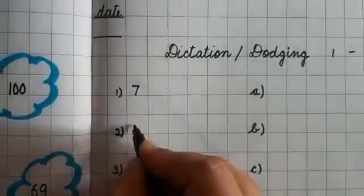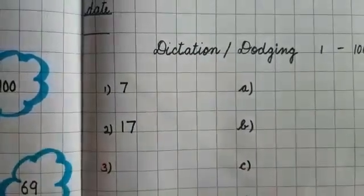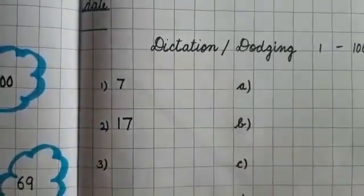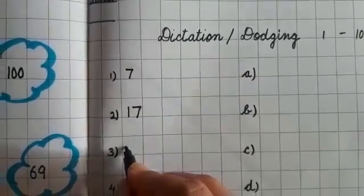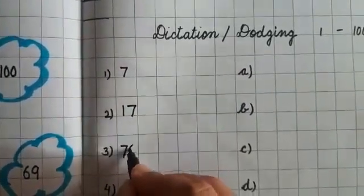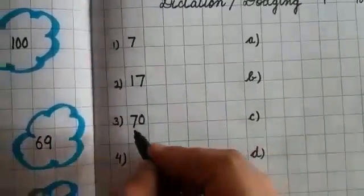Now your next digit is, write down 17. Good. 17. Yes, write down 70. 70.